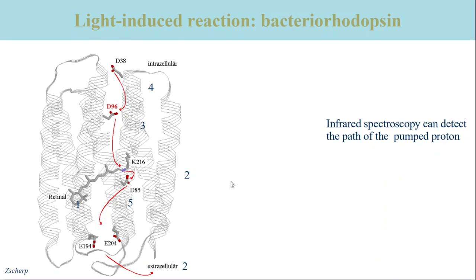Bacteriorhodopsin is a small integral membrane protein which converts light energy into a transmembrane proton gradient. The proton gradient is converted by the ATP synthase to ATP. The protein contains the chromophore retinal, which is also present in our retina. After absorption of a photon, retinal in bacteriorhodopsin changes its configuration from all-trans to 13-cis, which starts a cascade of reaction steps that transport one proton across the membrane.